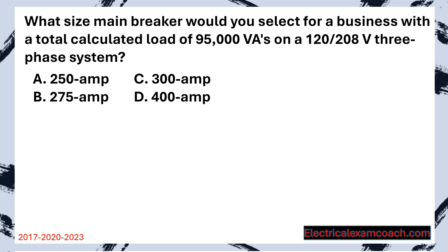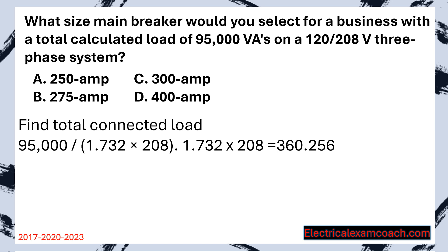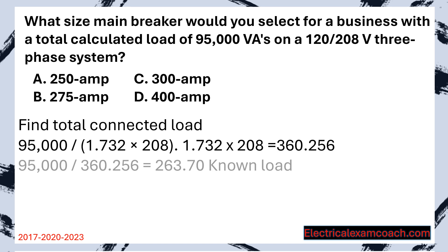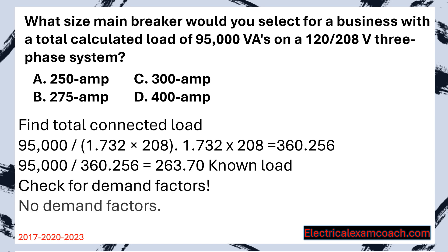Now let's do that exact same calculation but on a three-phase system and show you the beauty of three phase. What size main breaker would you select for a business with a total calculated load of 95,000 VAs on a 120/208 three-phase system? Step one: find our total connected load. They've already given us our total VAs. With three phase, there's one extra step because of the geometric nature — we have to take 208 and multiply it by the square root of three, which is 1.732. Once we work that math out, we end up with 360.256. Now we divide, and we end up with 263 amps — we would round up. There are no more demand factors.